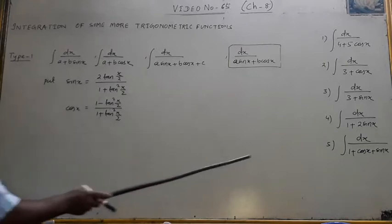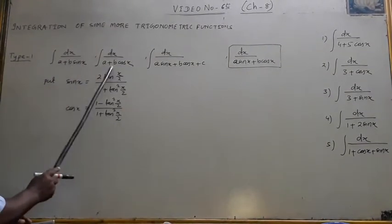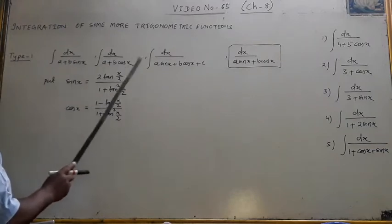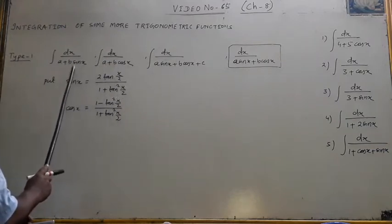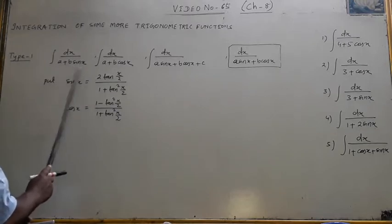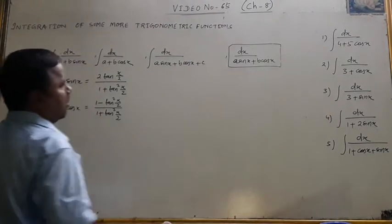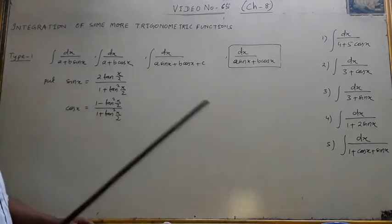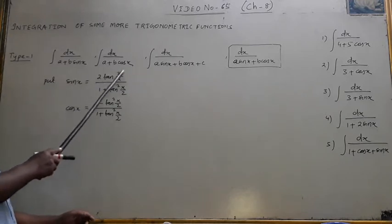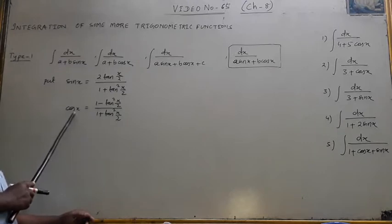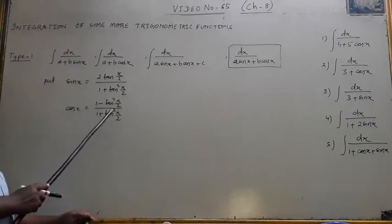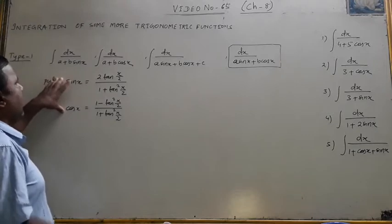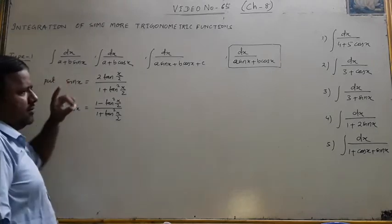There are 5 problems of Type 1: dx by (4+5cos x), dx by (3+cos x), dx by (3+sin x), dx by (1+2sin x), and dx by (1+cos x+sin x). For this type, you must substitute sin x = 2tan(x/2) / (1+tan²(x/2)) and cos x = (1−tan²(x/2)) / (1+tan²(x/2)). Remember these two formulas — they are very important for your exam.